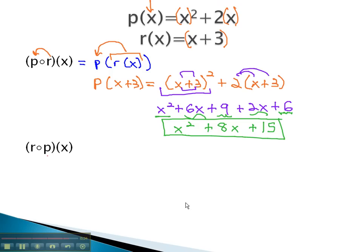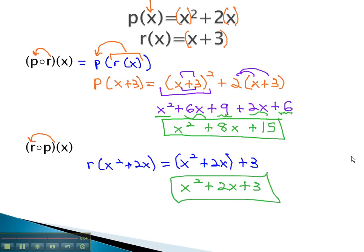When we switch the order, now we're asking to take the p(x) function and plug it into the r function. The r function r(x) becomes r of x squared plus 2x, where x is now x squared plus 2x, and then we add 3 to the end. With no simplifying to do, our final answer is x squared plus 2x plus 3.